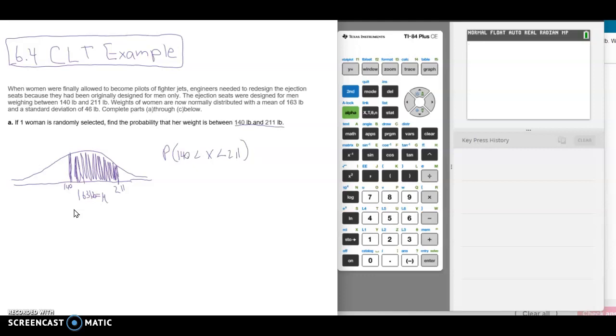I know that it's one individual x value because our problem says one woman. So because we're finding the probability for normally distributed data of one individual being between certain values, we do not need our central limit theorem. So this is no central limit theorem. Why? Because we're just finding the probability for one woman.